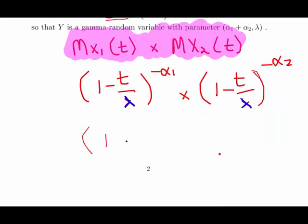Essentially this is straightforward enough. What we have to do there is just add them. So that's minus alpha 1 plus alpha 2.